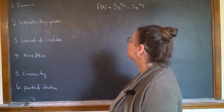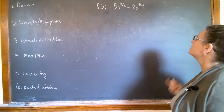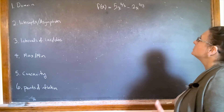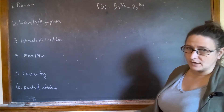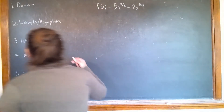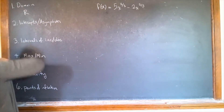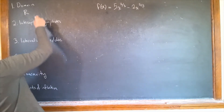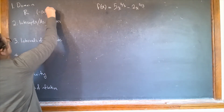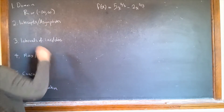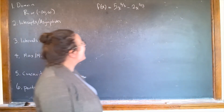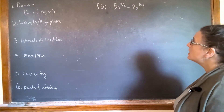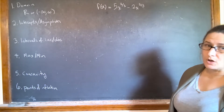First thing: domain. There's no problem with this function — it's defined everywhere because the exponents are two-thirds and five-thirds, so we have cube roots. We don't have to worry about negative numbers or anything, so the domain is going to be all real numbers. You can give the domain in interval notation.